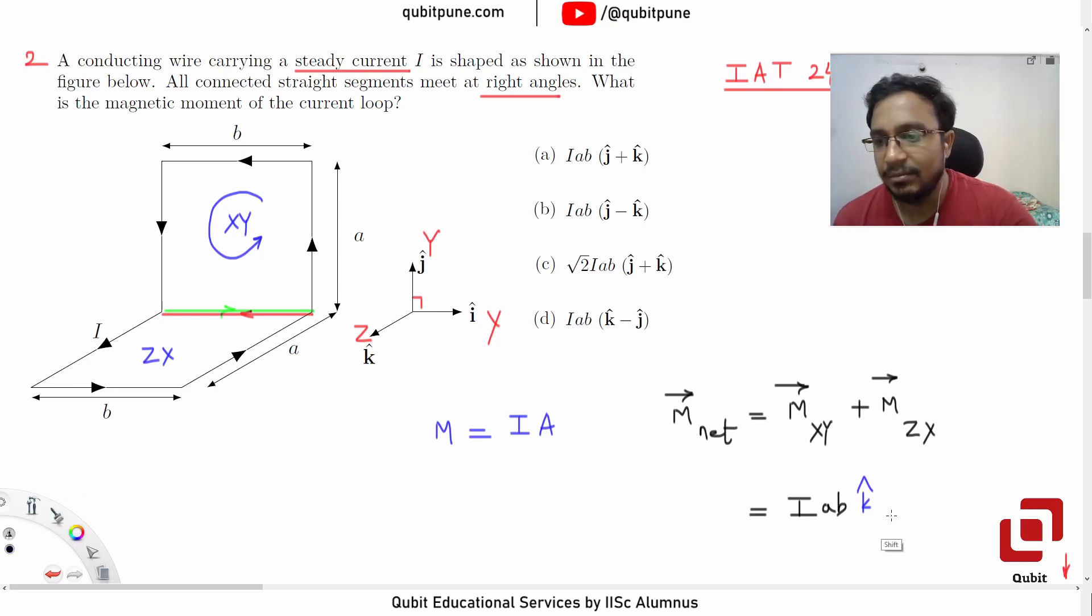So it will be M bar Z-X. Magnitude wise it is same because the area that it encloses is also rectangular with A and B as its dimensions.